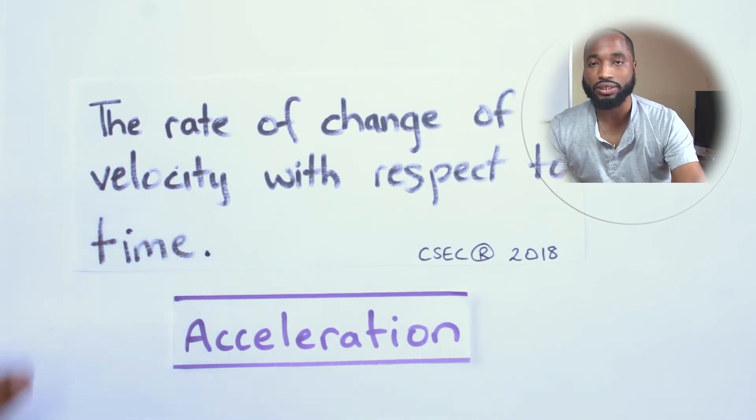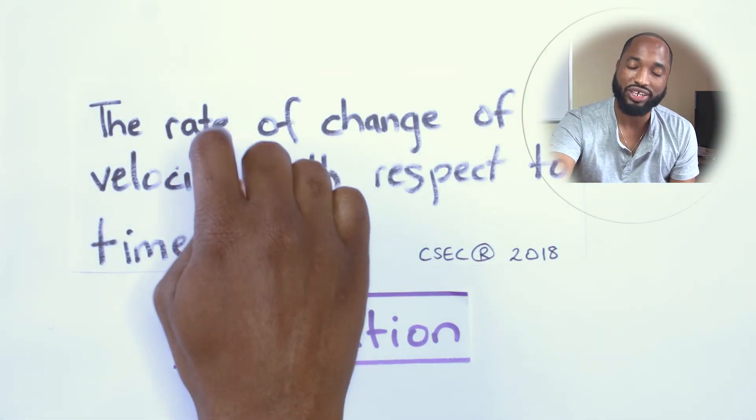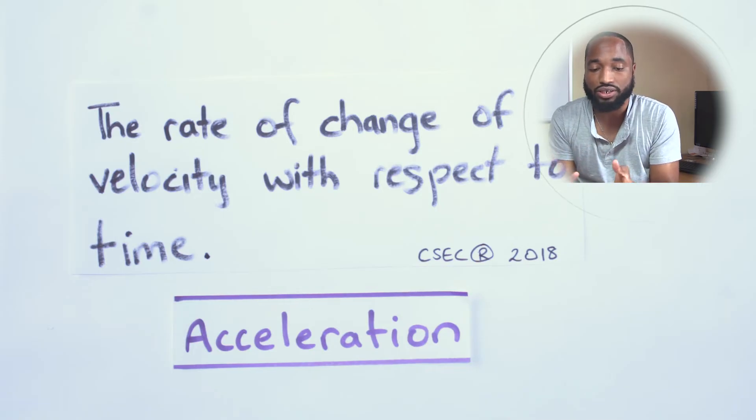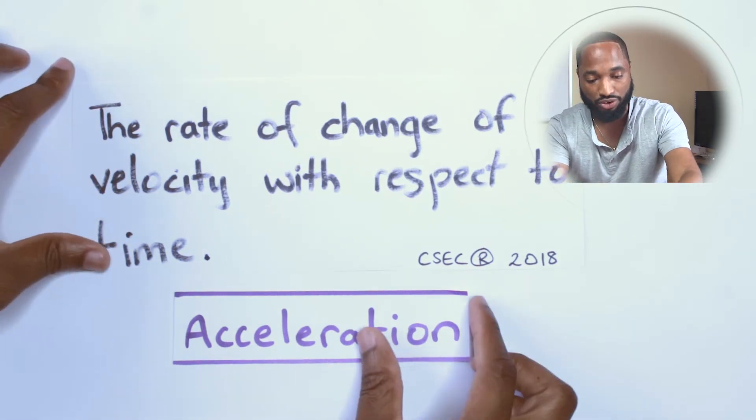Rate—we use this word anytime we divide by time. So it's how quick you're doing it, how fast you change your velocity with respect to time.